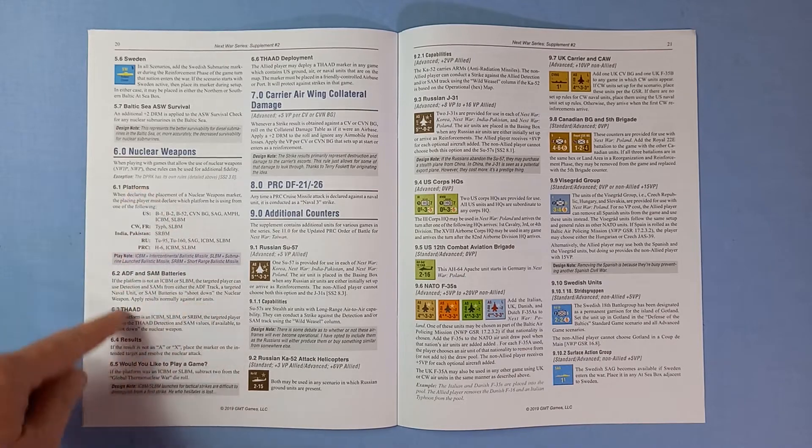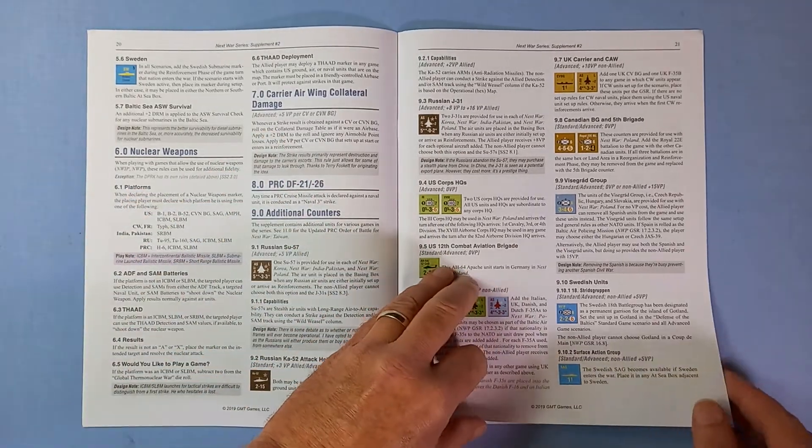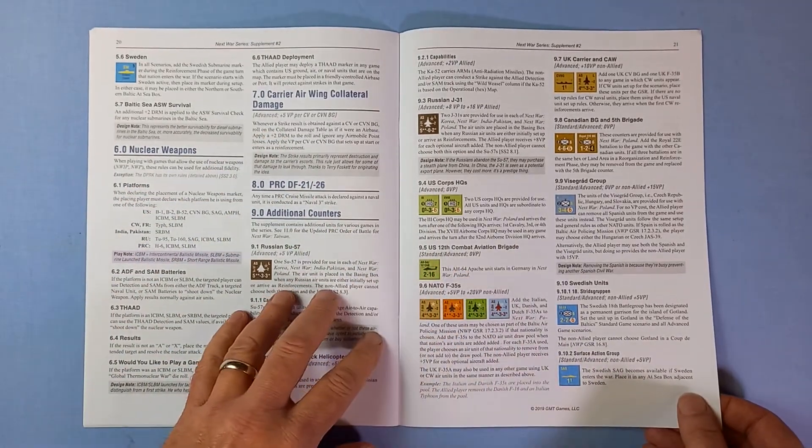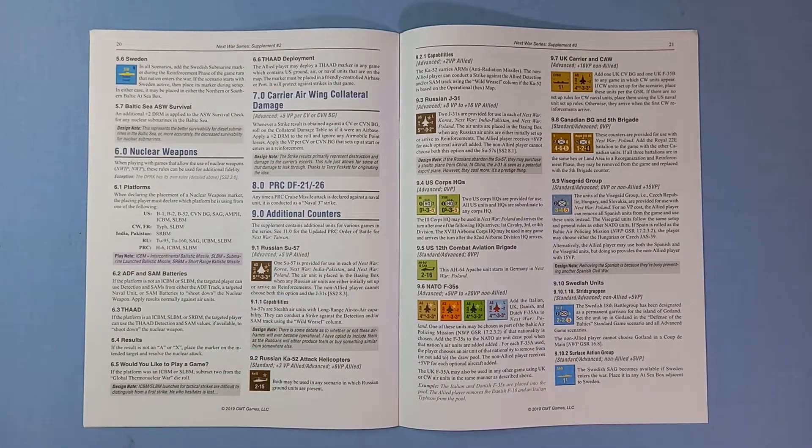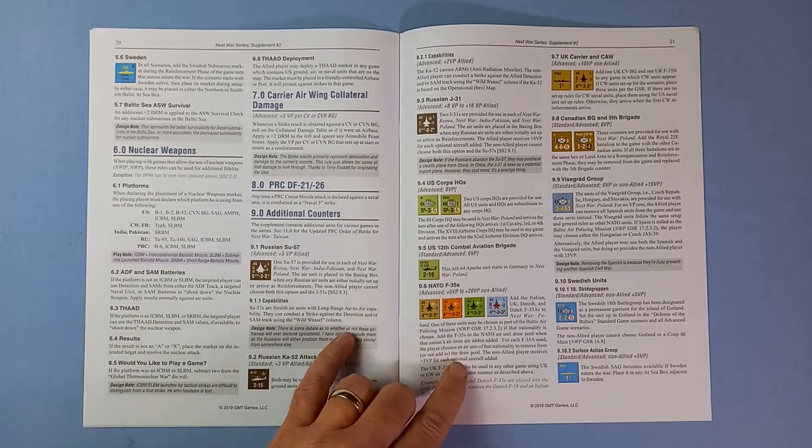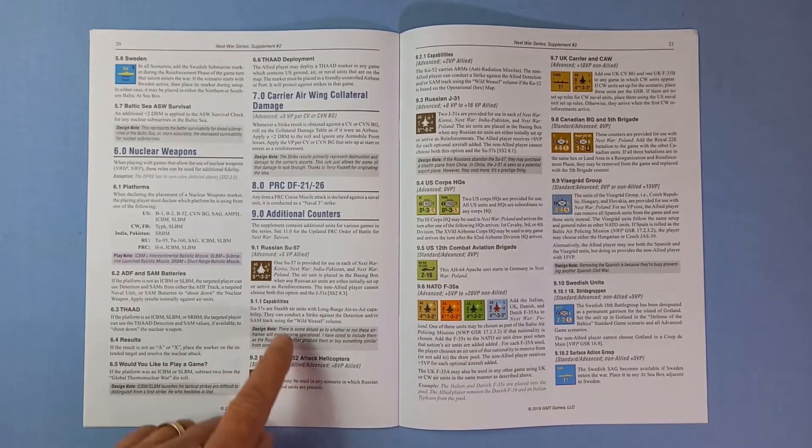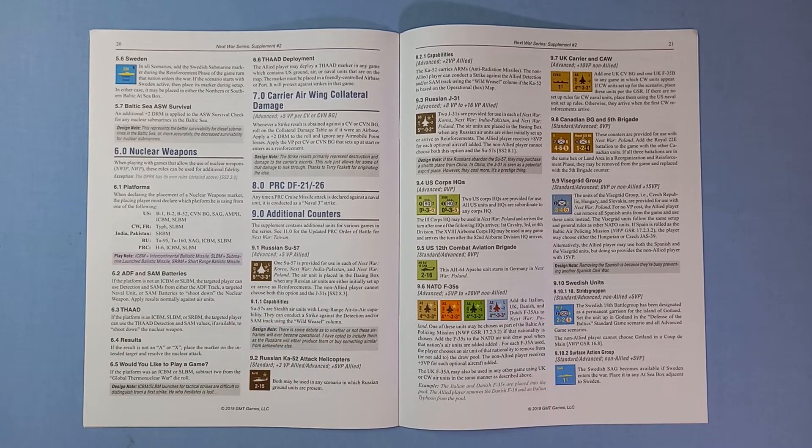Nuclear weapons. Carrier air wing collateral damage. Crikey. There's a lot in this. Additional counters. Yes, some of this won't apply to the two games I've got at the moment, but they'll be ready. I'm waiting for when I do get them.